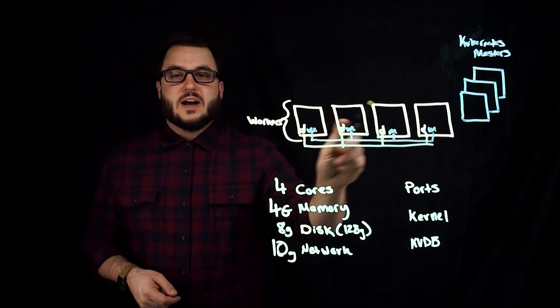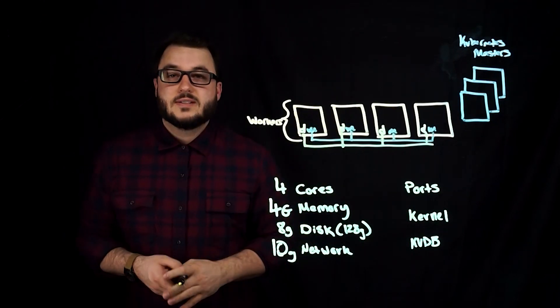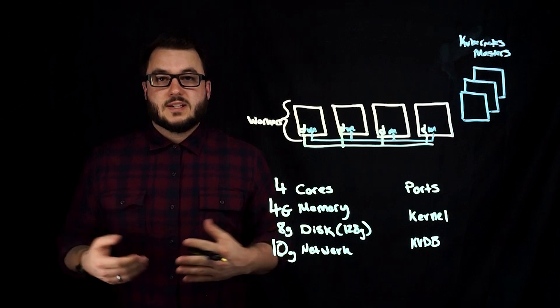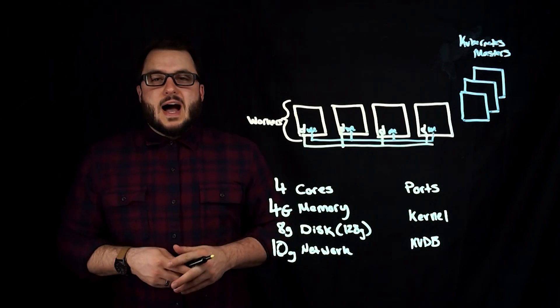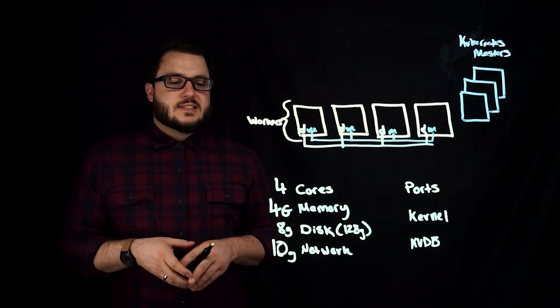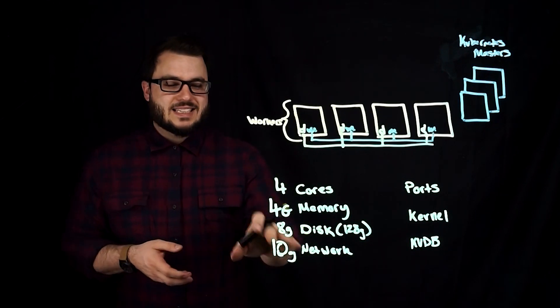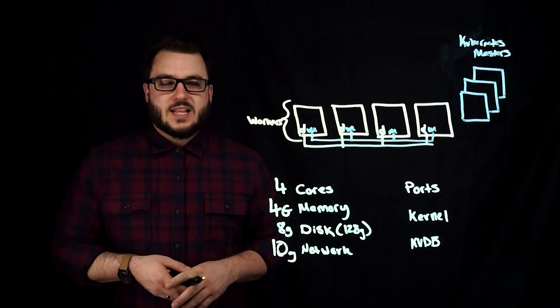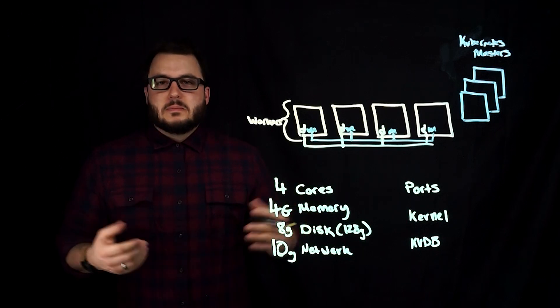This allows you to separate IO data traffic versus management and control plane. We'll talk about how to configure that in a second, but make sure at least the data network is using that 10 gig link. Management's probably fine with one.